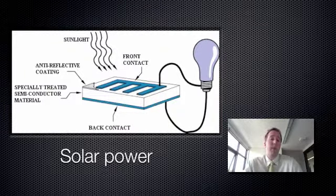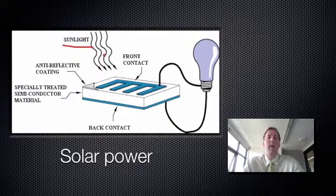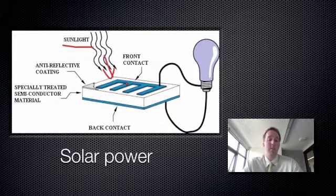Electricity is the flow of electrons. So what happens in the photoelectric effect, very briefly, is sunlight hits a material which is photoelectric, which is capable of turning light into electricity. This special material then absorbs the light and it generates little electrons. So that's electricity.